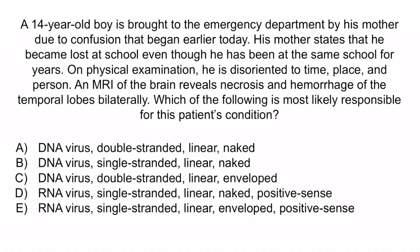Now that we've covered the image, let's review with a question. A 14-year-old boy is brought to the emergency department by his mother due to confusion that began earlier today. His mother states that he became lost at school even though he has been at the same school for years. On physical examination, he is disoriented to time, place, and person. An MRI of the brain reveals necrosis and hemorrhage of the temporal lobes bilaterally. Which of the following is most likely responsible for this patient's condition? A: DNA virus, double-stranded, linear, naked. B: DNA virus, single-stranded, linear, naked. C: DNA virus, double-stranded, linear, enveloped. D: RNA virus, single-stranded, linear, naked, positive sense. Or E: RNA virus, single-stranded, linear, enveloped, positive sense.